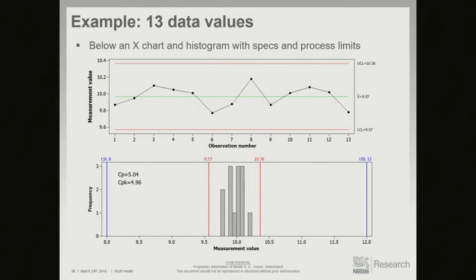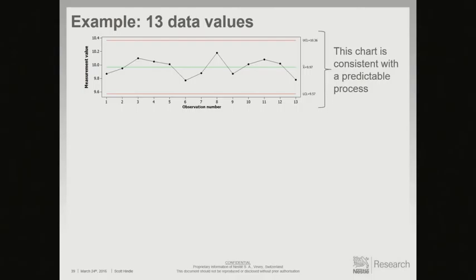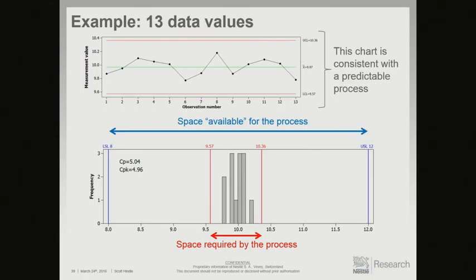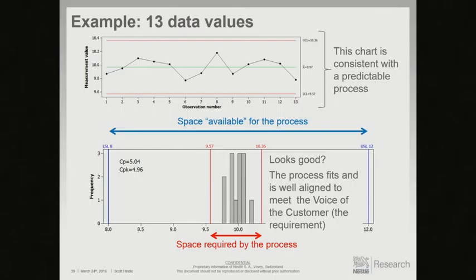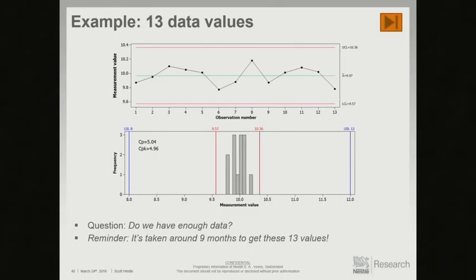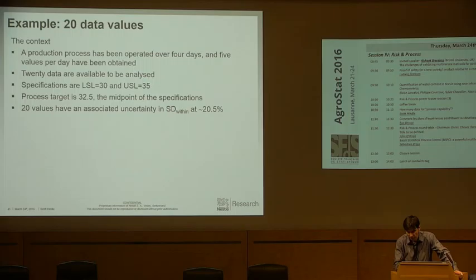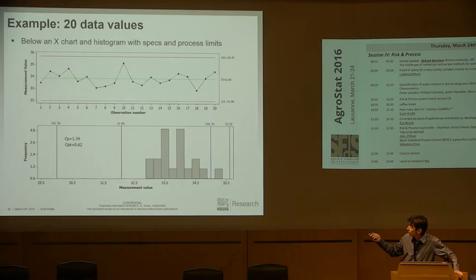Some examples. Here we have 13 data — not a lot. The process is in operation approximately once per month. The specs are shown, and the target is the midpoint. So after nine months, you have around 13 data values with a pretty high uncertainty. You can look at the data on a simple control chart for individual values, with a histogram below where the red lines are the three-sigma limits from the control chart. From that chart, we can say this is consistent with a predictable, statistically controlled process. The space available versus the space required by the process looks pretty good.